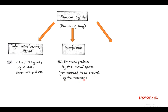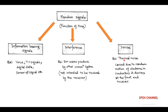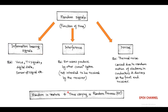Also, a type of noise called thermal noise is observed due to random motion of electrons in the receiver circuit which consists of conductors and electronic devices. So, the information-bearing signals which are random in nature and also varying with respect to time are collectively called as random process.